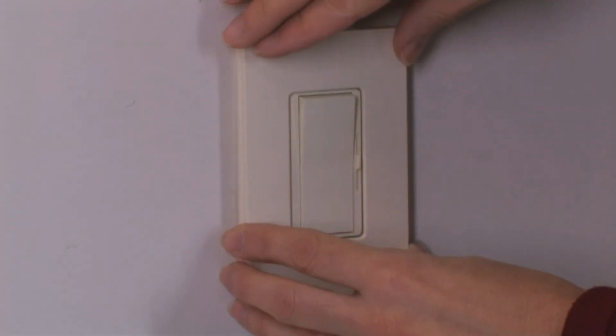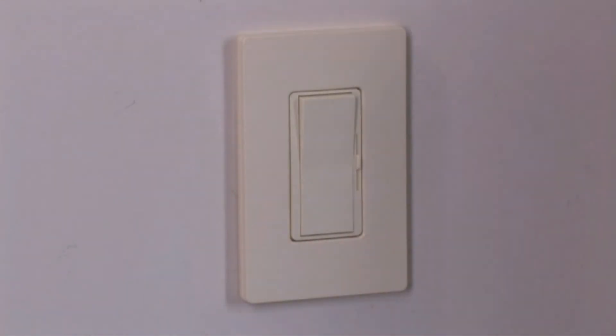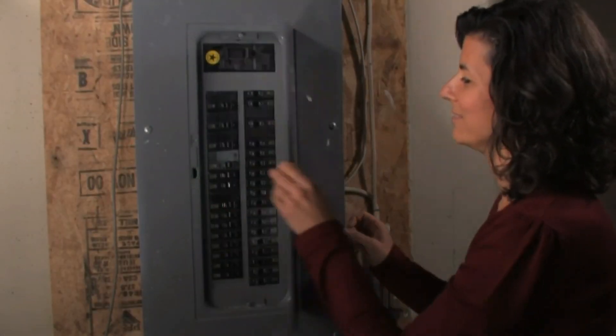Finally, snap the front of the wall plate into place. If you're using your original wall plate, put it back on the way you took it off. You can now turn the power back on at the breaker.